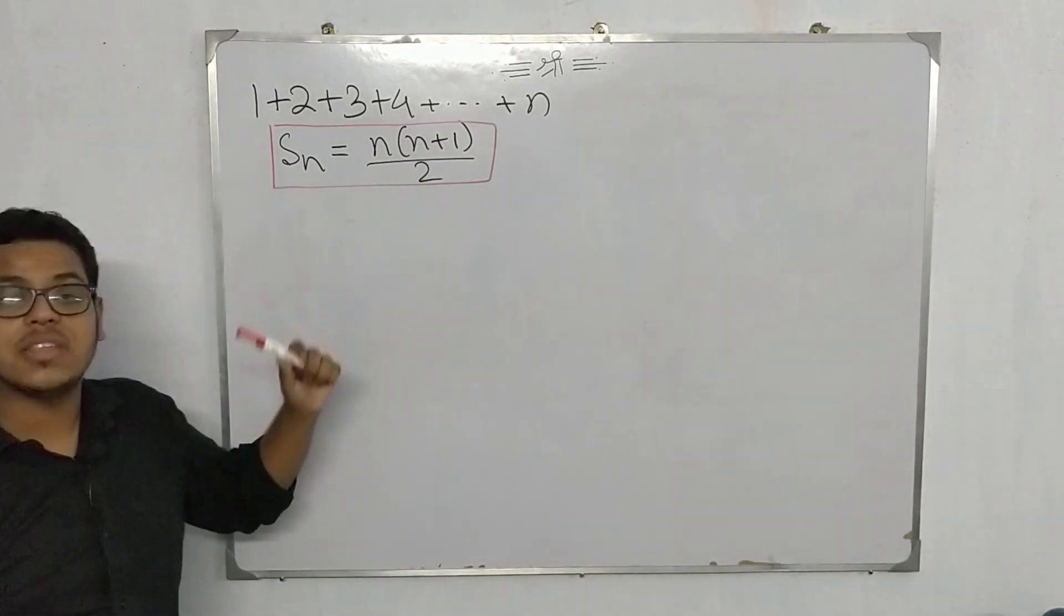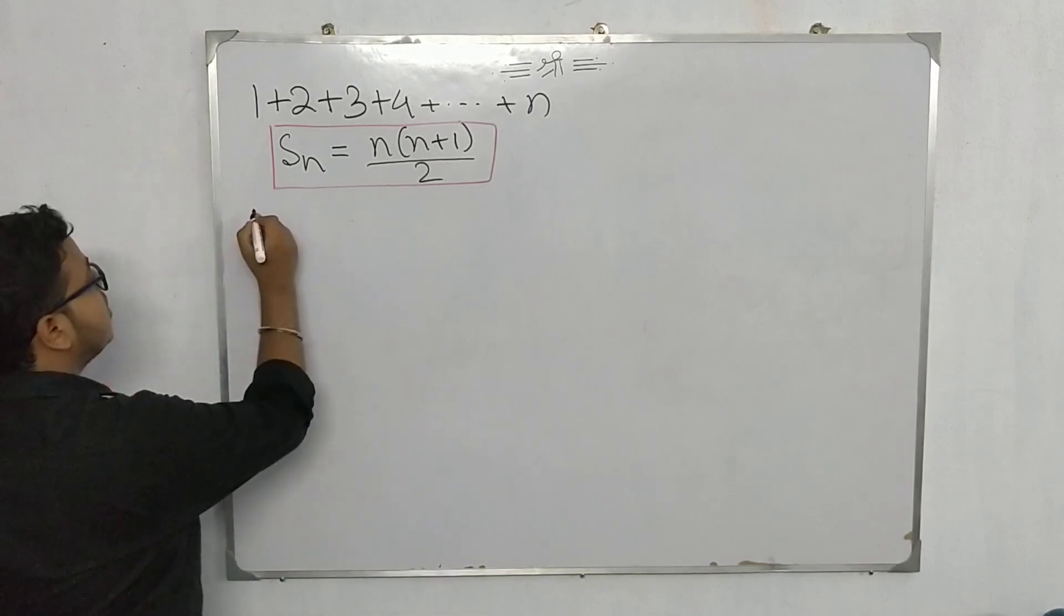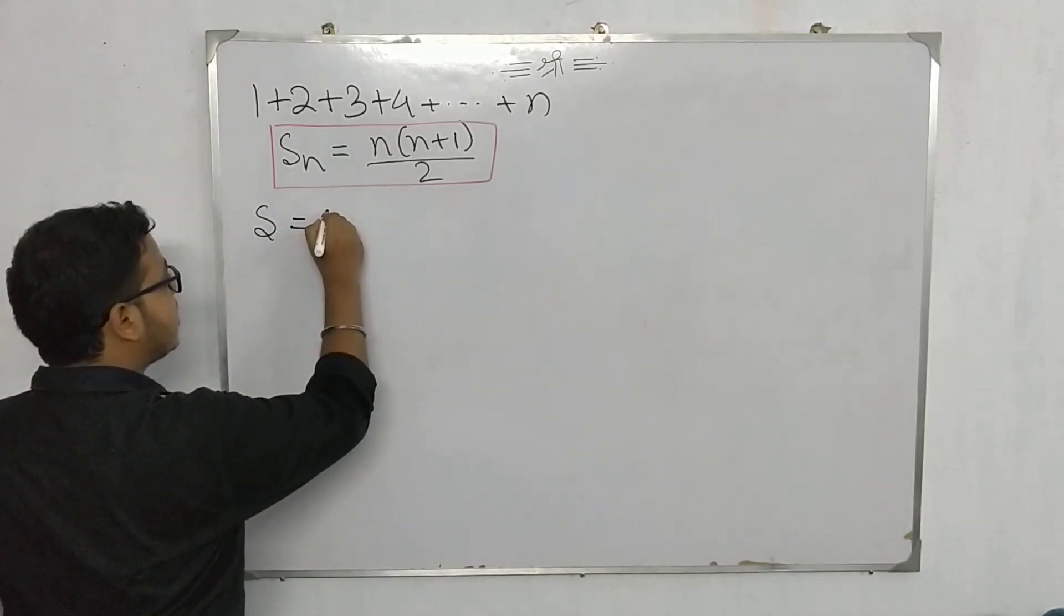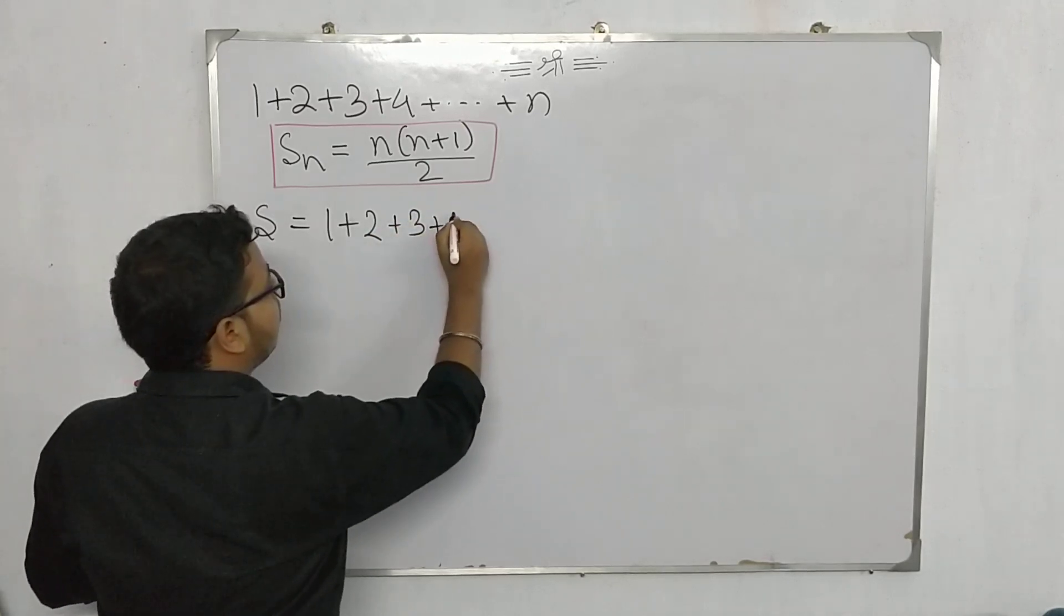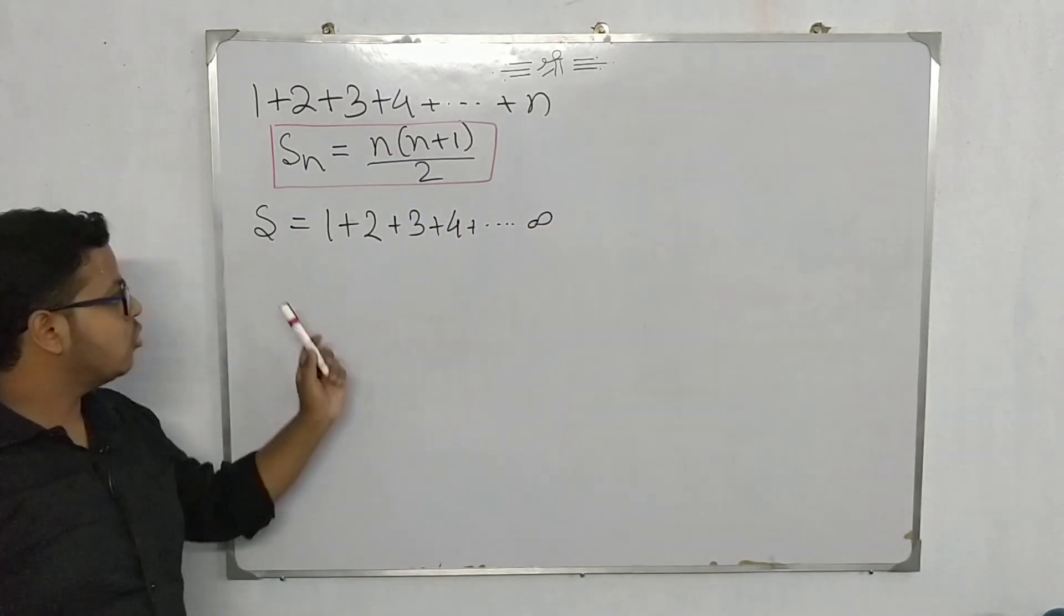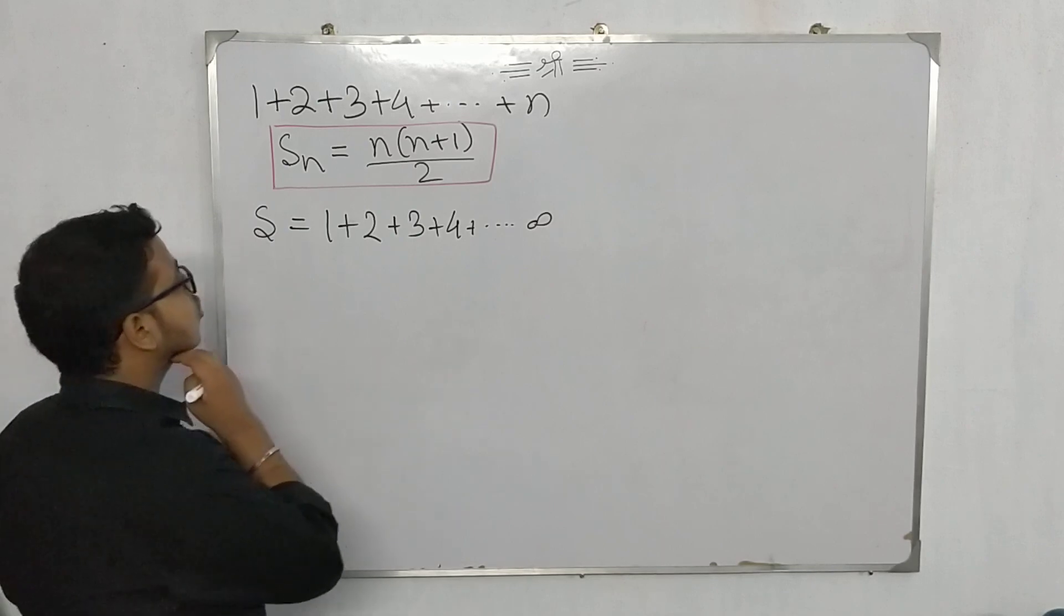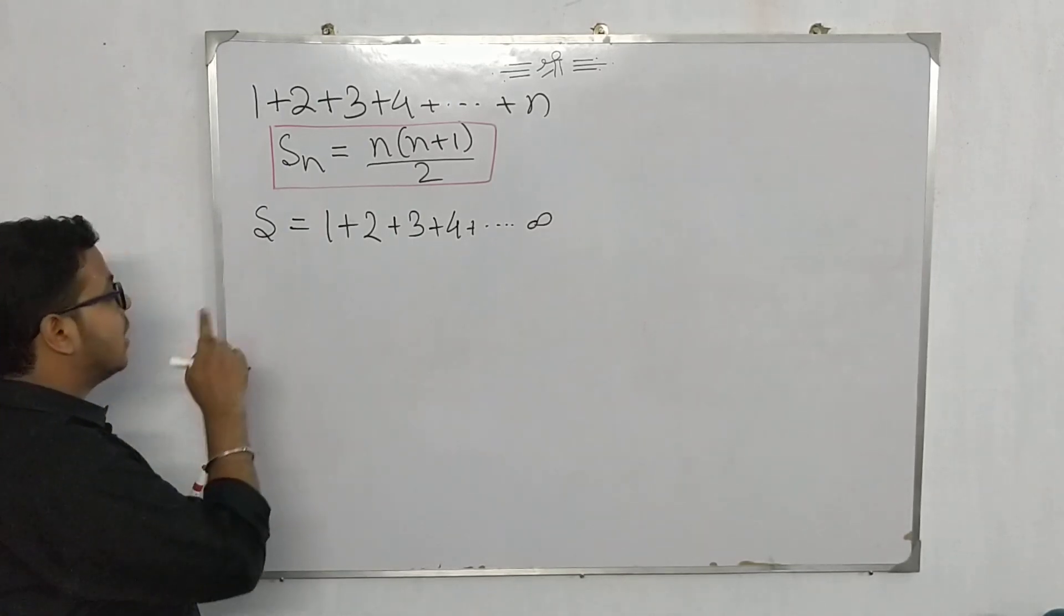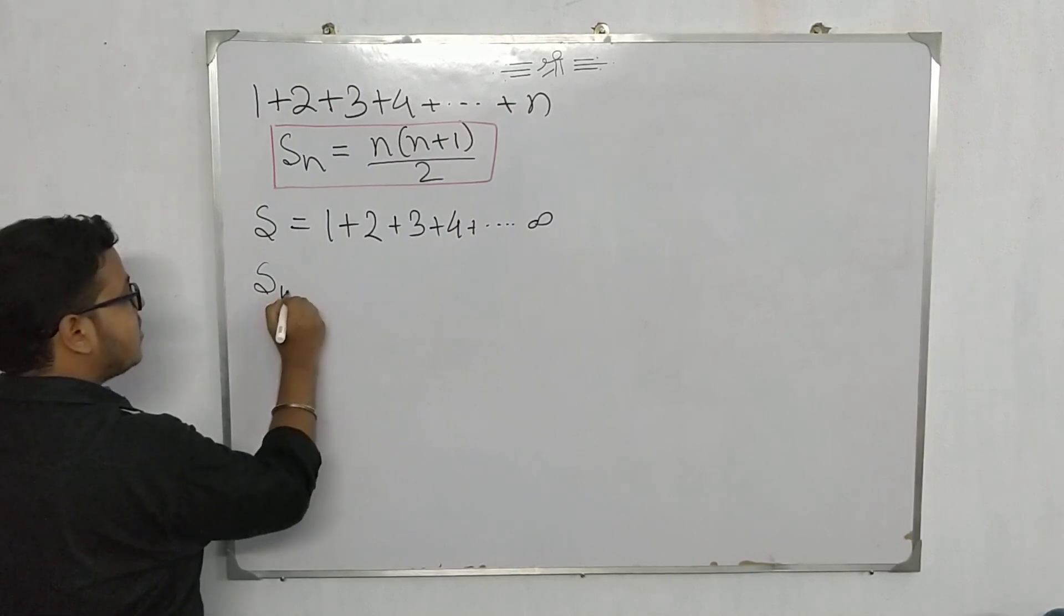Now here since n is finite we can solve it like this. What if n becomes infinite? That is, say the series is s, the sum in the series which we need to find out, 1+2+3+4 up to infinity. This is the series which we need to calculate. So how do we do that? Let's start the proof.